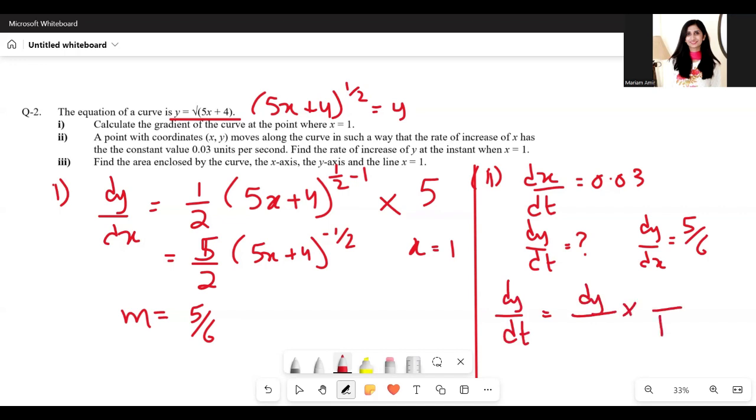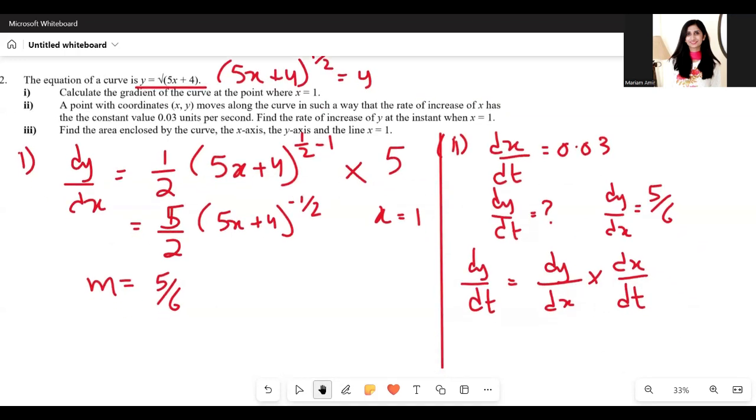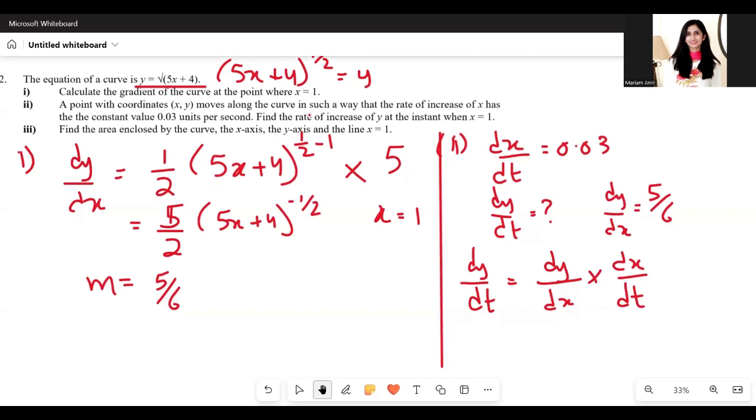We write dy/dx times dx/dt. So dy/dx is 5/6 times 0.03. This comes out to be 0.025.